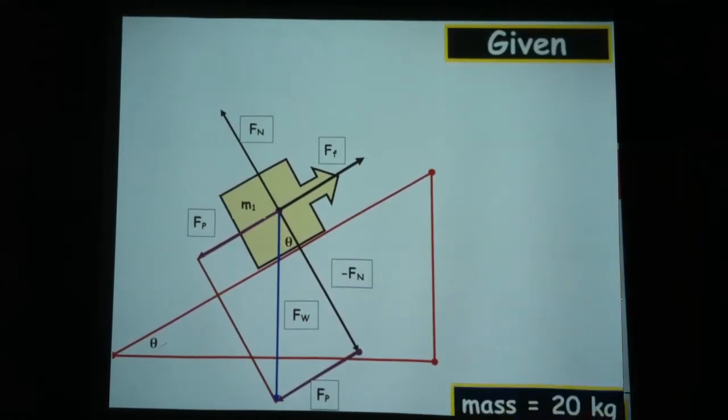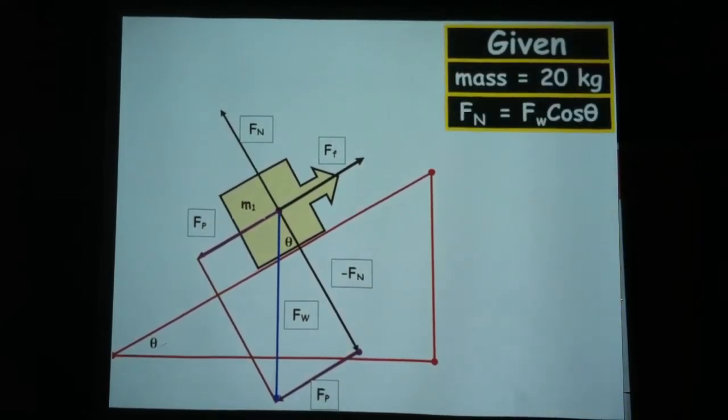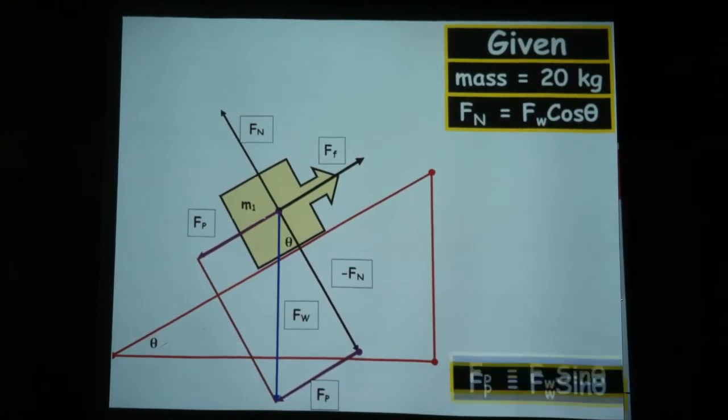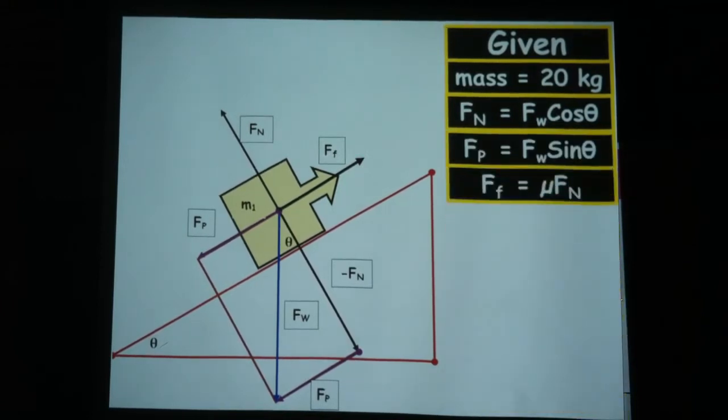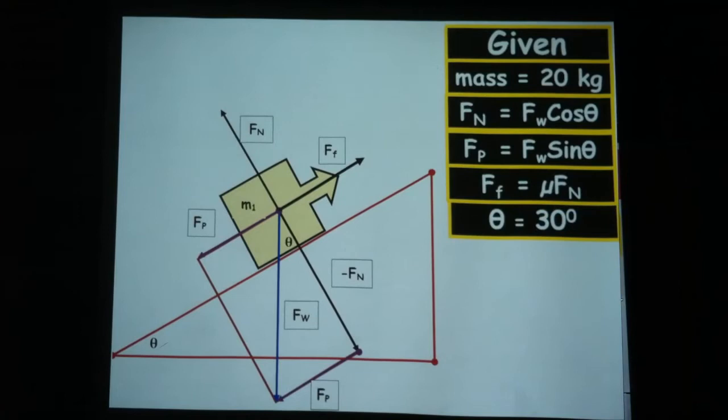The angle there is the same as the angle there. And then now given 20 kilograms is the mass, some basic equations. The angle is 30 degrees, mu, the coefficient of the friction is 0.4.